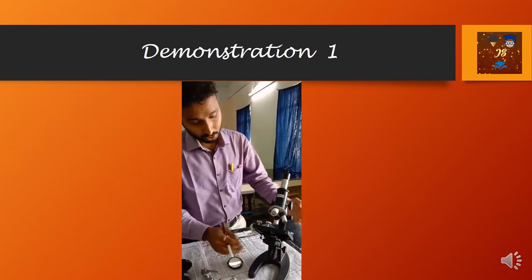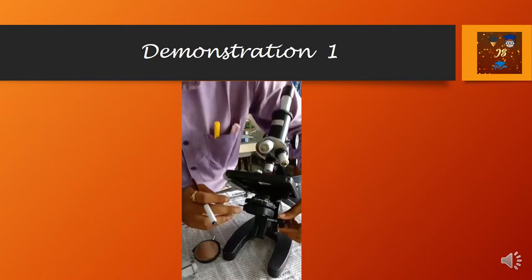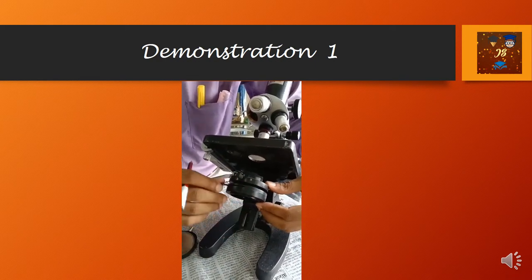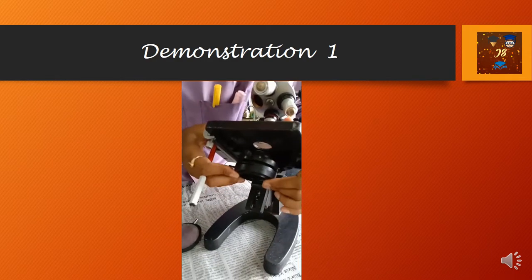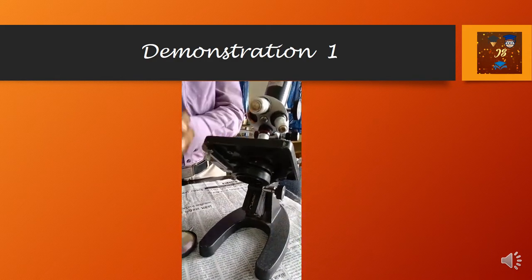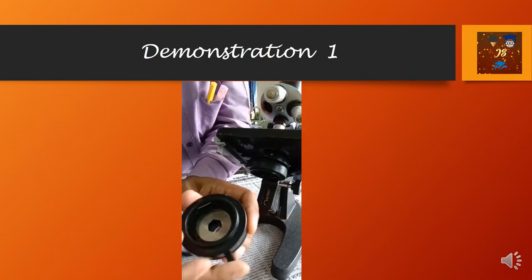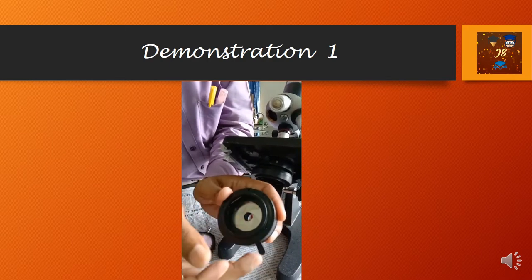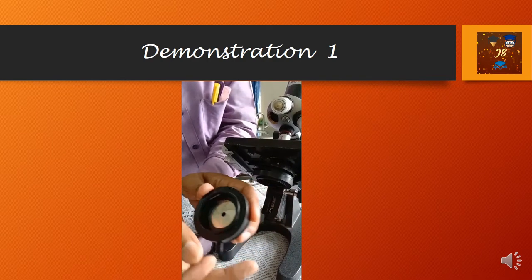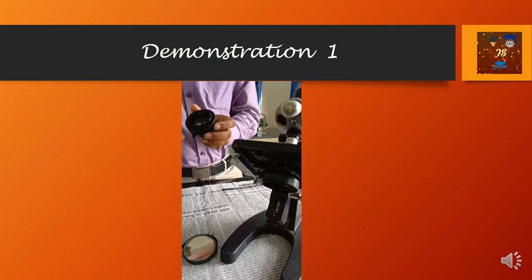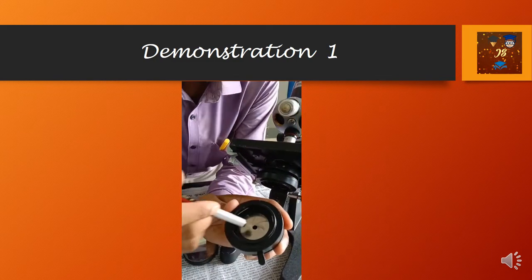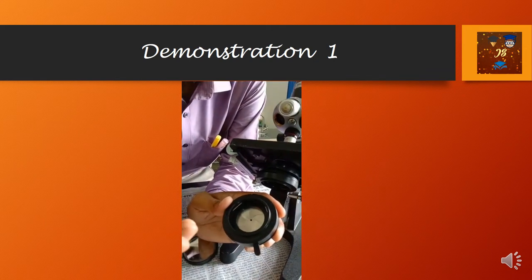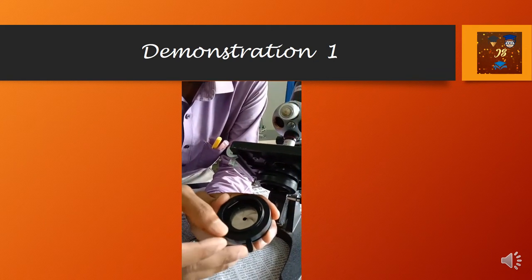This is called the diaphragm. The diaphragm also has an aperture. The aperture works with the light source — you can use it to gather the light, and if the light source is too much, you can use it to dim and control the light.